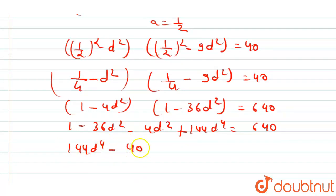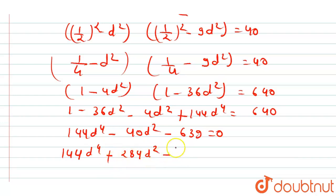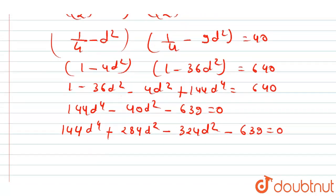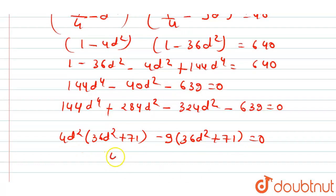We now factorize 144d⁴ - 40d² - 639 = 0. Splitting the middle term: 144d⁴ - 284d² + 284d² - 324d² - 639 = 0. Taking 4d² common from the first part and -9 from the second part gives (4d² - 9)(36d² + 71) = 0.